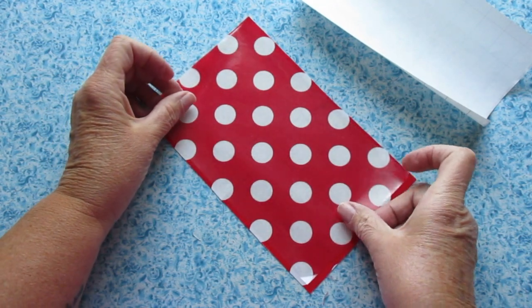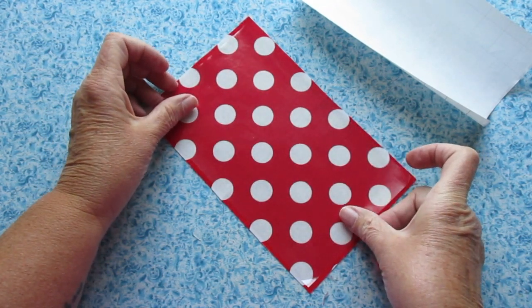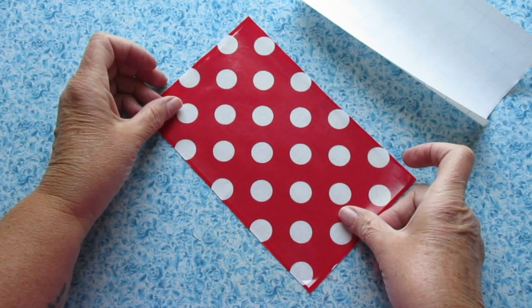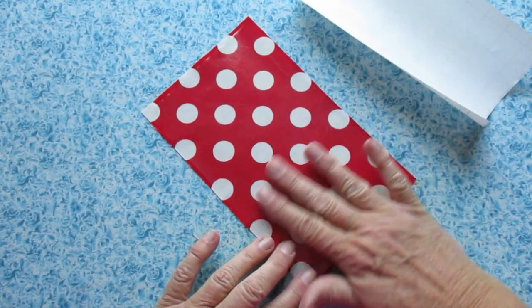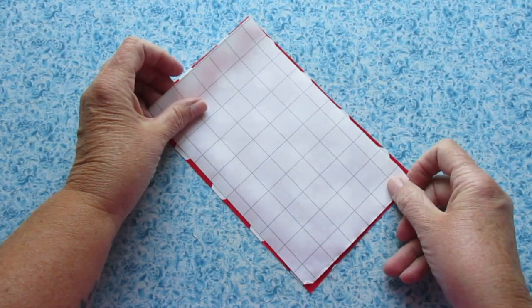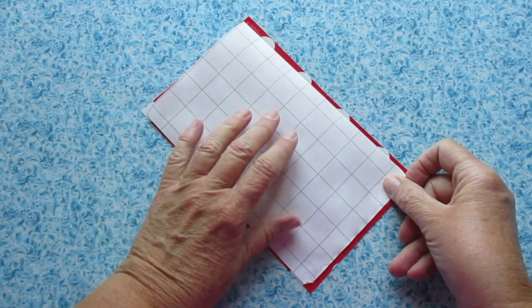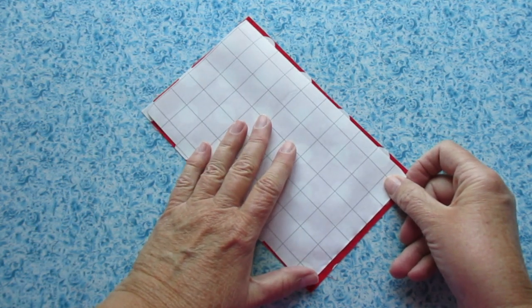Since we cut our vinyl a little bit smaller than our fabric, we'll have a little bit of space available on the outside and that's a good thing. Smooth the vinyl so it sticks to the fabric nicely. Now place the shiny side of the paper on top of your vinyl. We're using it like a pressing cloth.